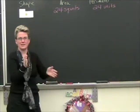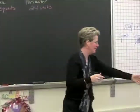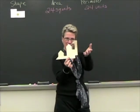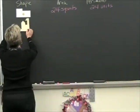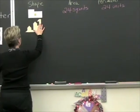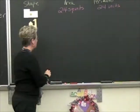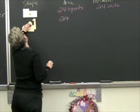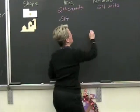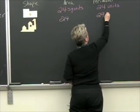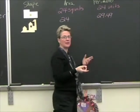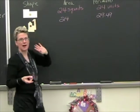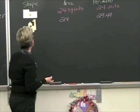Here's another one — looks like a barn with something coming out, like Mario's thing. Here we have another figure whose area is 24 square units, and the perimeter on this one was approximately 29.49. That's approximate because this one had some square roots of 2 in it, and square root of 2 is irrational — it's a decimal that goes on forever.